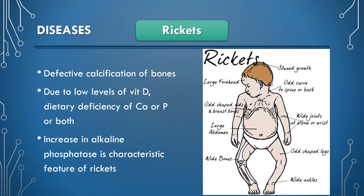Rickets is a disorder of defective calcification of bones. It is due to low levels of vitamin D, dietary deficiency of calcium or phosphorus, or both. Increased alkaline phosphatase is a characteristic feature of rickets.